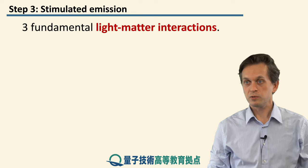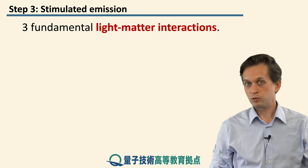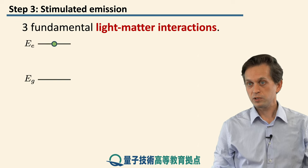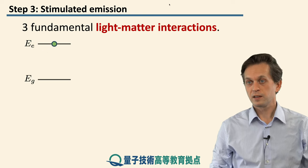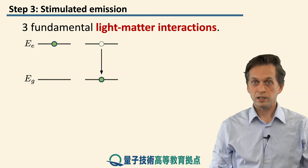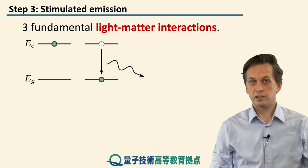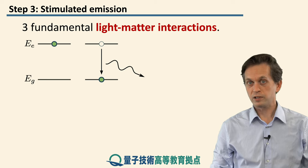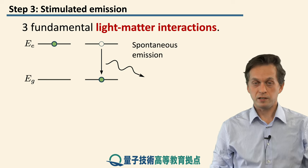So let's review the three fundamental light-matter interactions. We have already seen two of those. The first one: consider our two-level atom, which is in the excited state. After some time, such an atom will de-excite — it will transition into its ground state — and in the process, it will give out energy in the form of a photon traveling in some random direction. This is spontaneous emission.